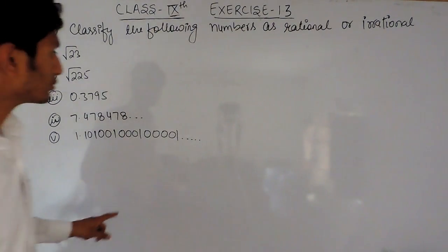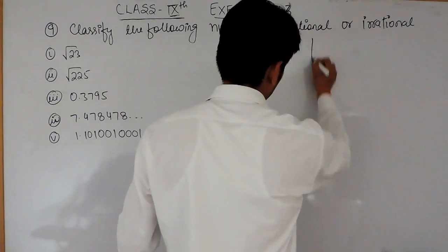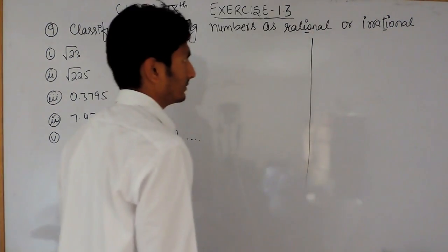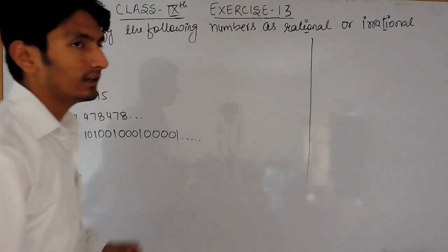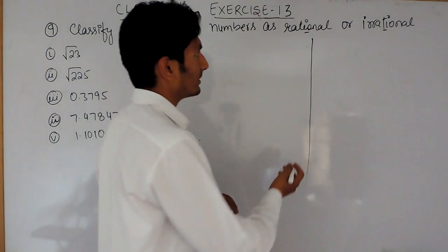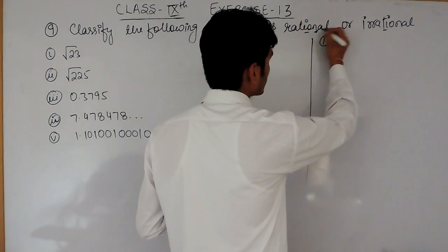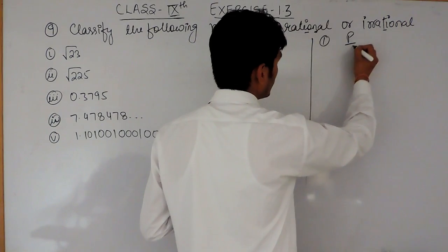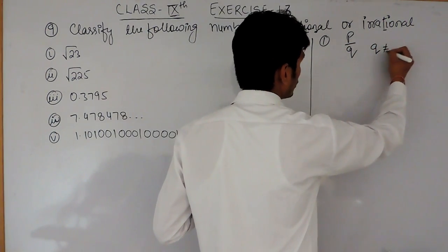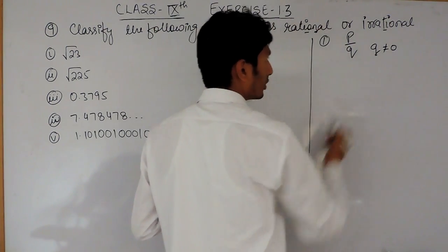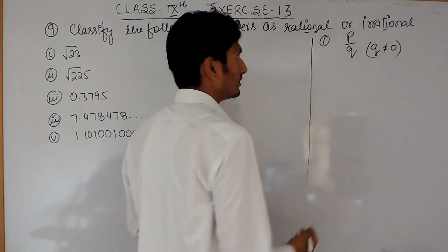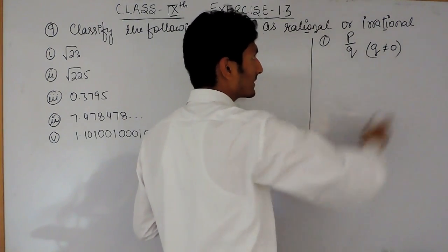Before solving this, let us again define what are rational and what are irrational numbers. As we have already discussed in the previous videos, when we talk about rational numbers, the first definition is: rational numbers are basically the numbers which can be written in the form of p upon q, where p and q should be integers and q should not be equal to 0. So all other numbers are irrational.